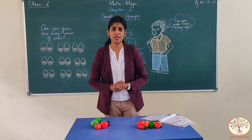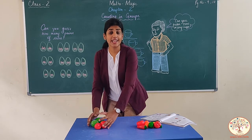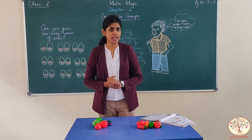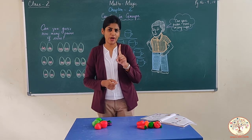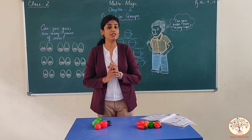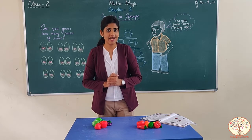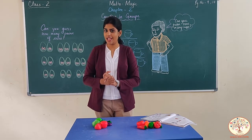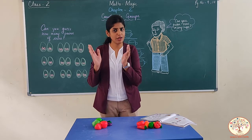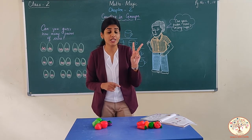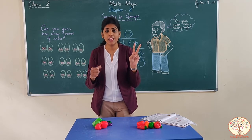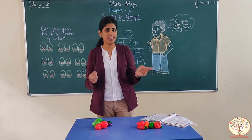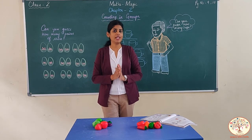Agar ham one by one count karenge, to it will take too much time. So we will count in groups today. One more example — jab ham bananas purchase karna chahte hain, toh kya bolte hain shopkeeper ko? Do we ask for one banana? No. We ask them to give one dozen bananas. How many bananas come in one dozen? 12. If I purchase two dozen bananas, that is 12 plus 12 equals 24. Got it? This is how we count in groups.